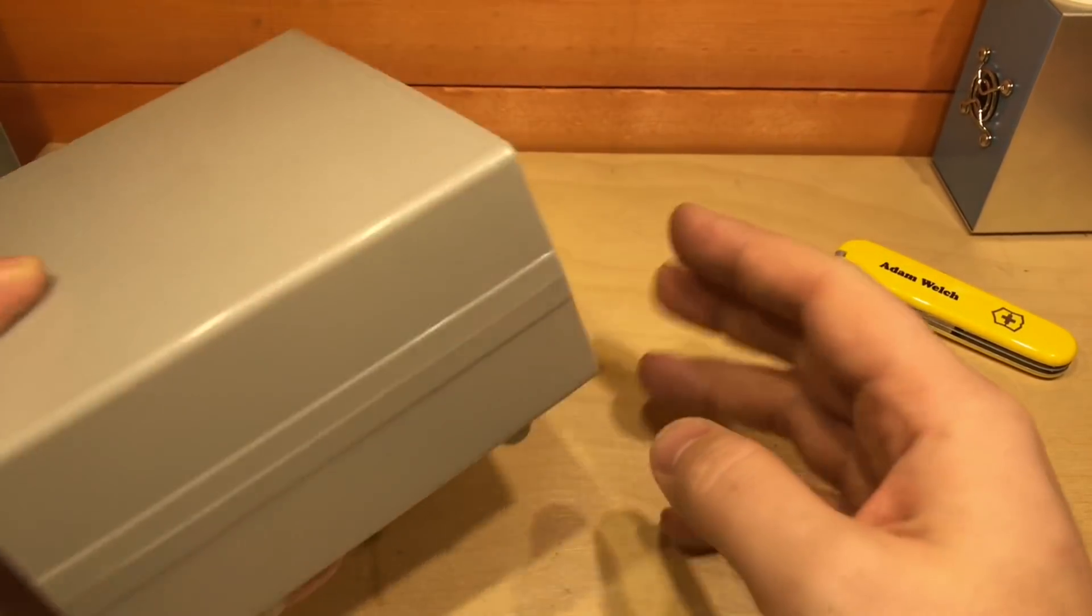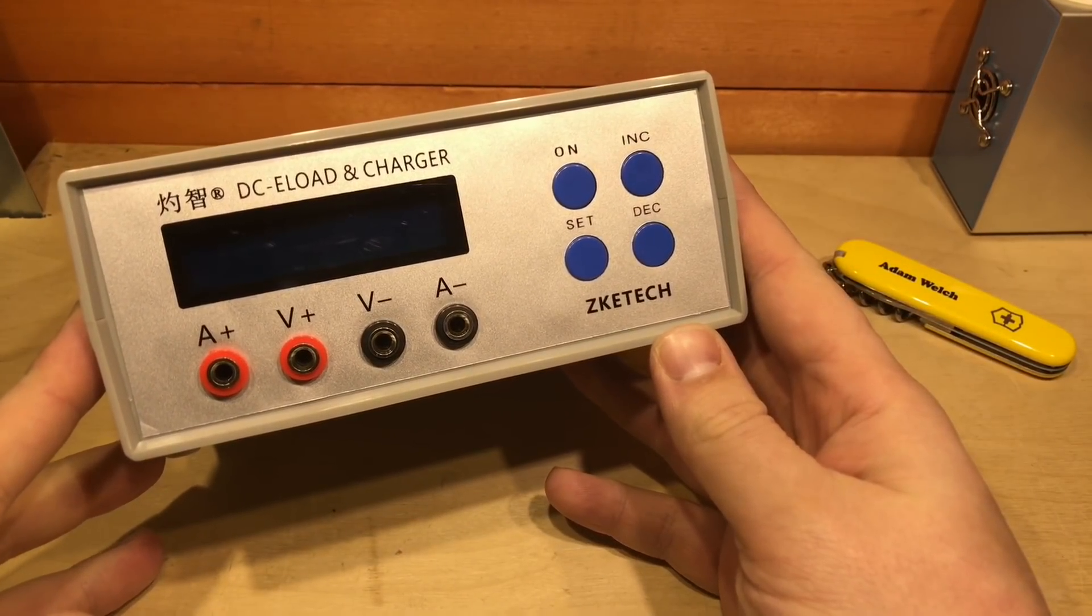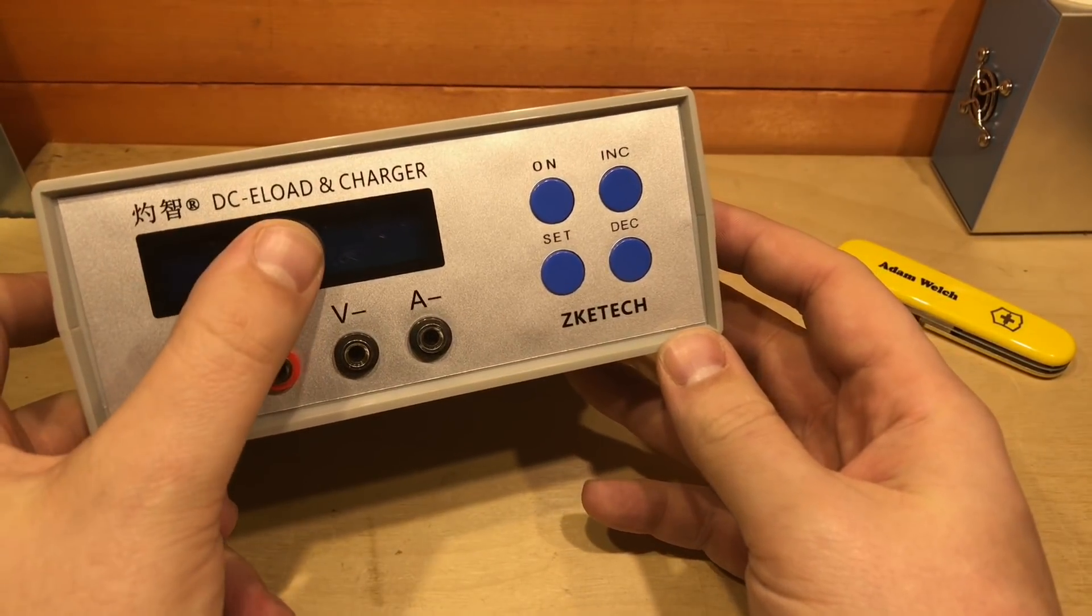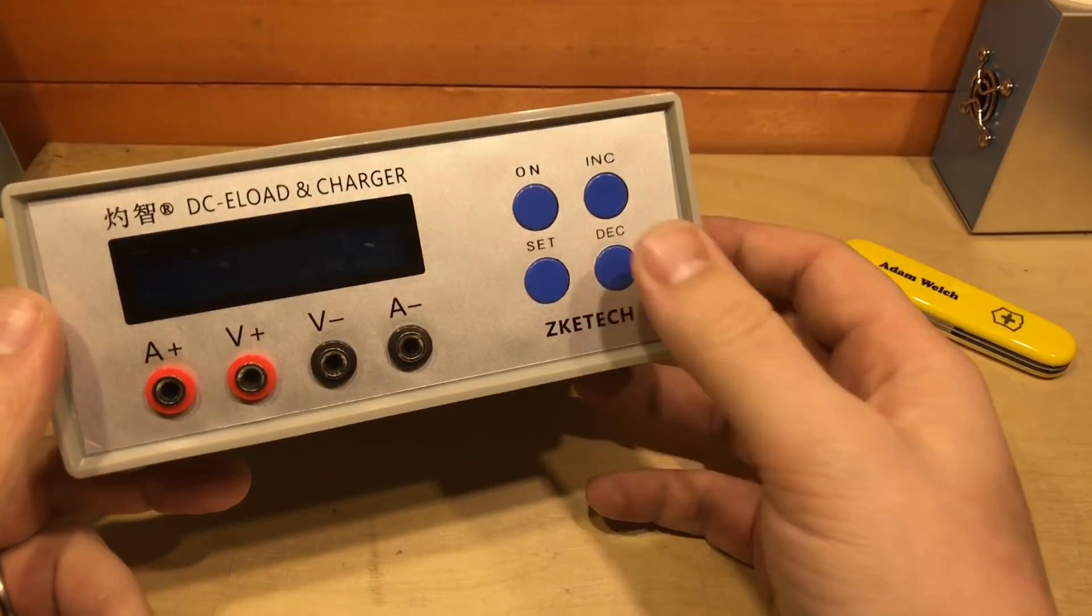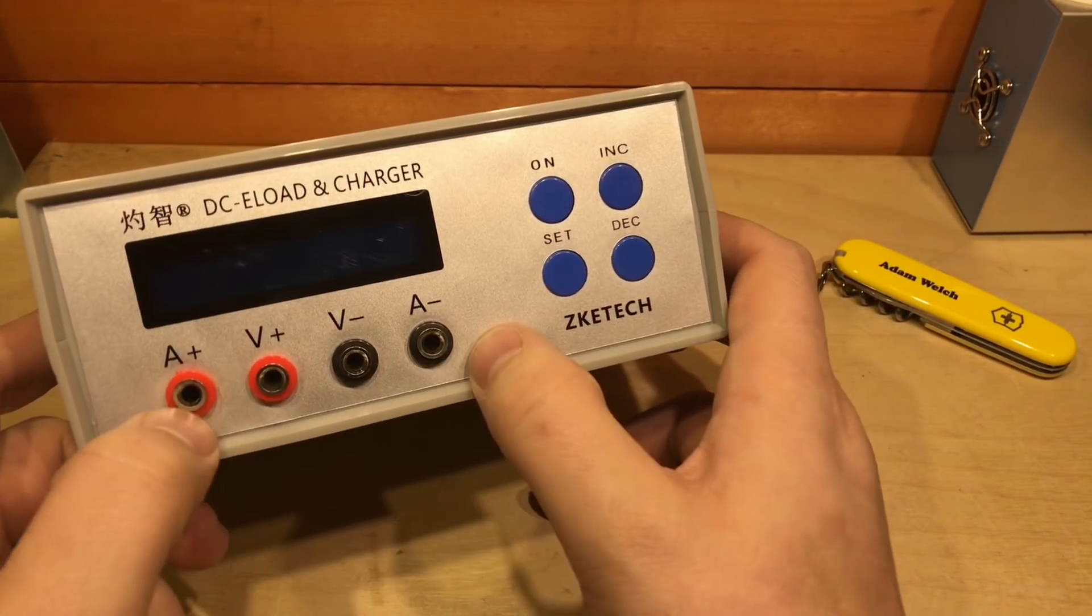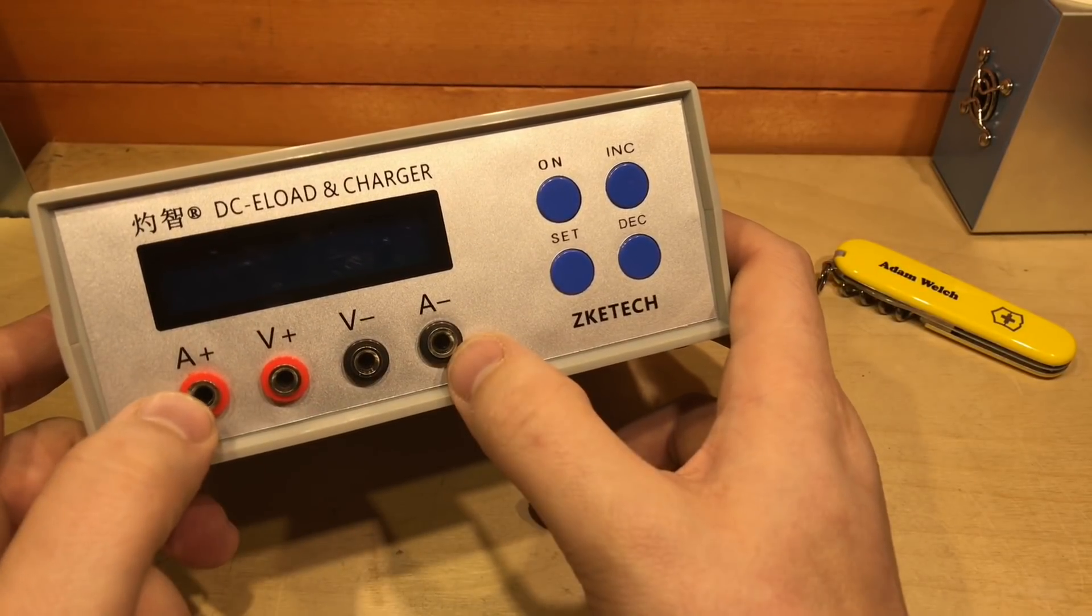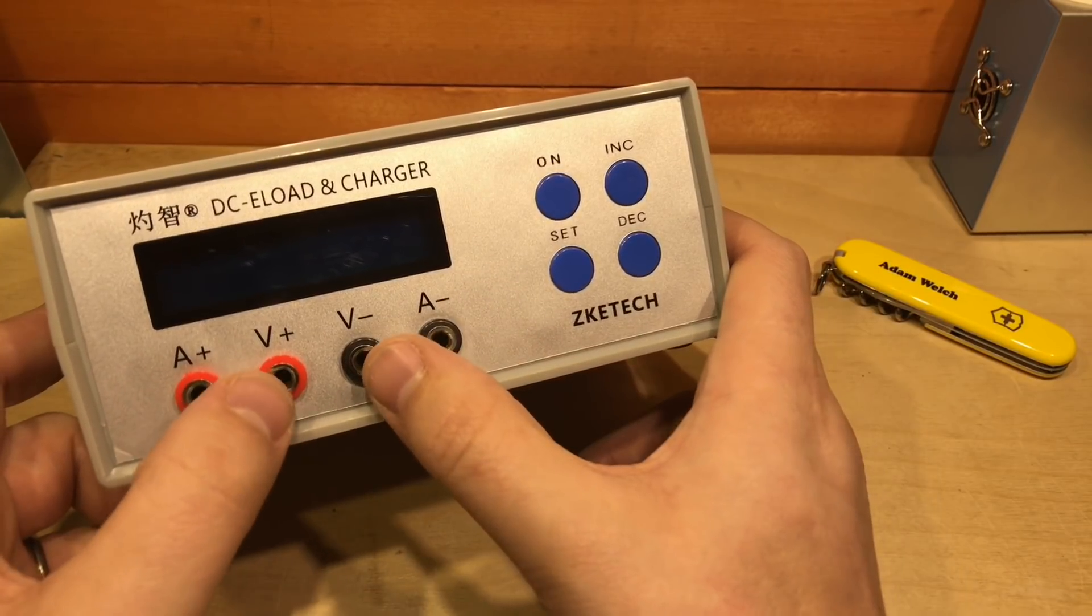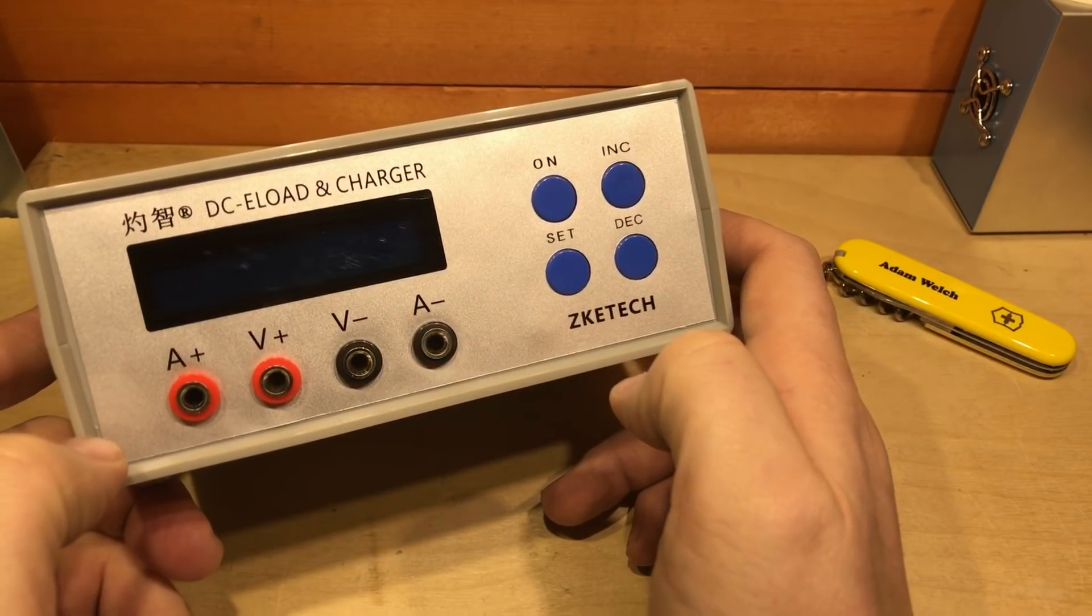This is not actually marked on the case, this is the EBC A05, and it's a DC electronic load. But this also has a charger built into it, just four buttons for the menu on the front, four connections here. It is a four-wire measurement on this unit, so the current flows over these two banana plugs here, and we test the voltage over these two, so that should give us a more accurate reading.